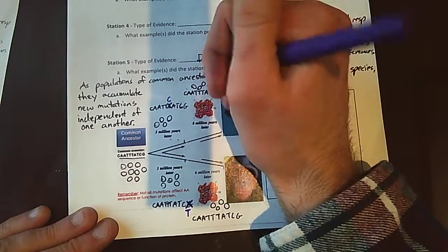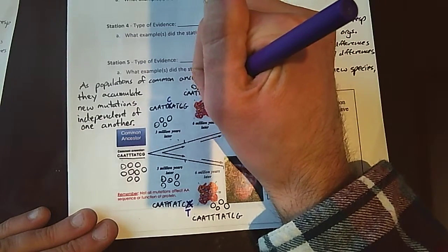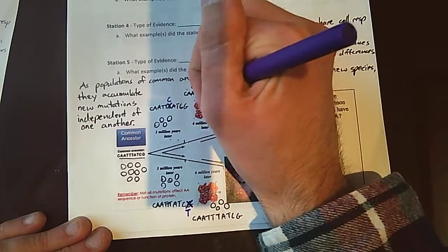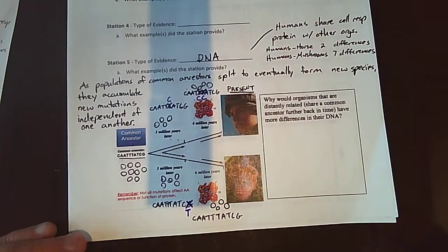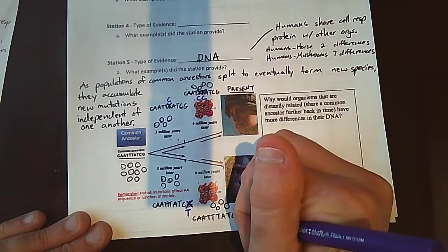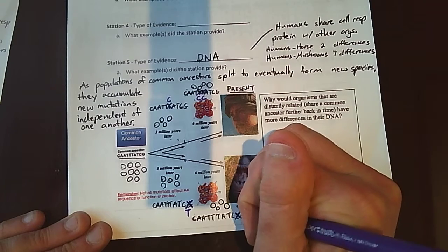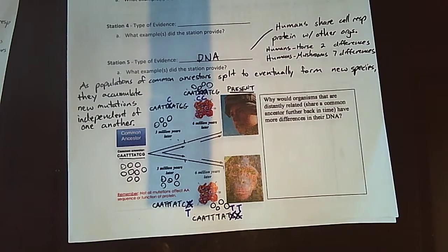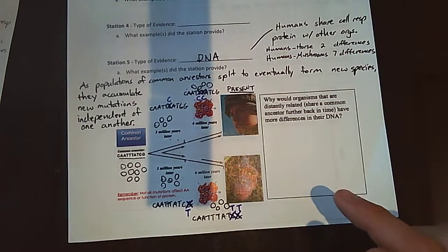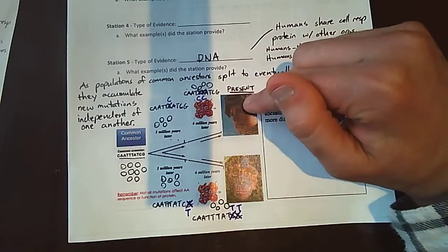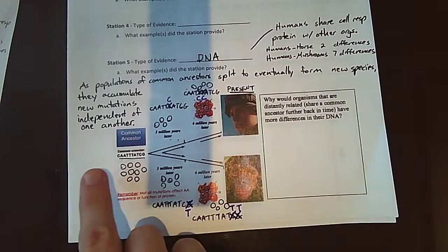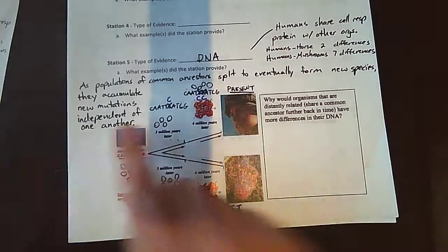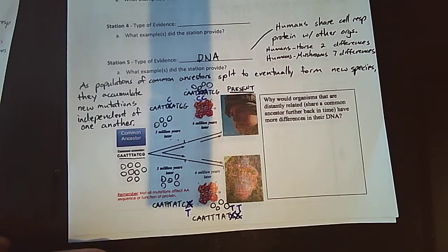not only do we have that mutation where that C is, but maybe another random mutation happens. Maybe that random mutation is here, and it's another C. And maybe in the chimpanzee, we had the T here before. Maybe the other random mutation is right here again, and another T. Now, notice that these mutations are random, and because they're random, they happen in different places in the humans and the chimpanzees. So as time increases and these populations are separate from one another, that allows them to accumulate those mutations independently of one another.